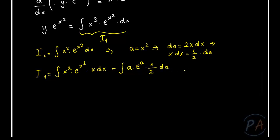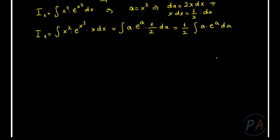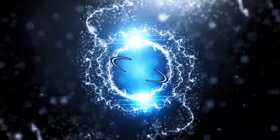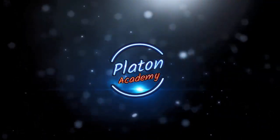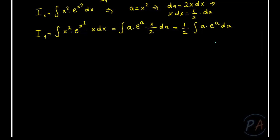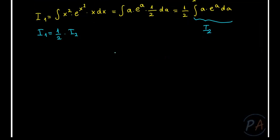The integral I1 can be rewritten by substituting x squared as a and x dx as one-half da, giving: one-half times the integral of a times exponential a da. I'll call this simpler integral I2, so I1 equals one-half times I2. Once I solve I2, I1 is automatically solved.